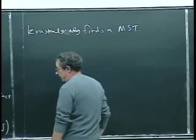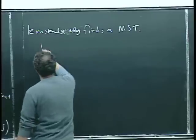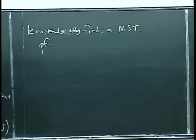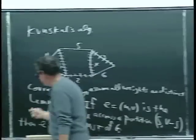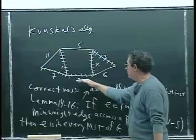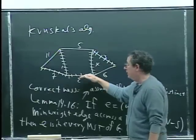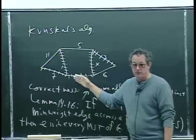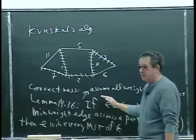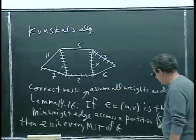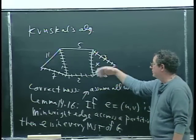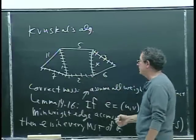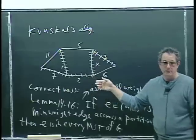Now I want to give a proof that Kruskal's algorithm finds a minimum spanning tree, again assuming distinct edge weights. We're going to use this lemma. We just want to argue that every time Kruskal takes an edge — selects an edge to put into the minimum spanning tree it's building — it is at that moment the minimum weight edge across some partition of the nodes, so that the lemma can be applied. The lemma says that if an edge has this property, it must be in every minimum spanning tree of G, so the algorithm never makes a mistake.